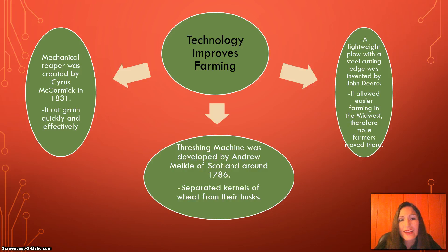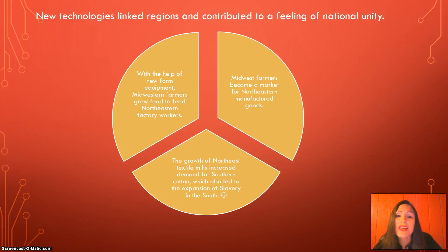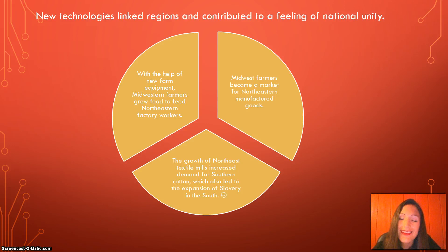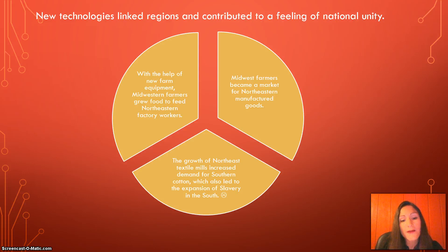New technologies linked regions and contributed to a feeling of national unity. With the help of new farm equipment, Midwestern farmers grew food to feed Northeastern factory workers, while Midwest farmers became a market for Northeastern manufactured goods. They were also connected with the South, because the growth of Northeast textile mills increased the demand for Southern cotton — everyone was working together, building national unity.